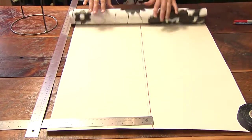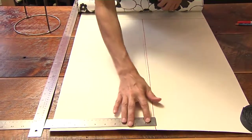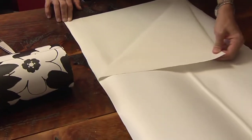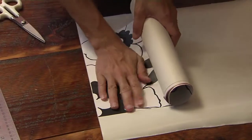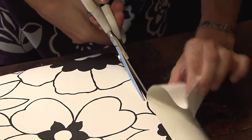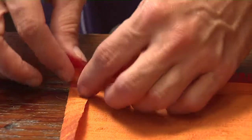Now cut the wallpaper to the exact height of the shade frame, but on the diameter, add two inches. Take off one layer or side of the adhesive paper and slowly press the wallpaper onto the adhesive. Then cut the adhesive paper to the exact shape of the wallpaper.